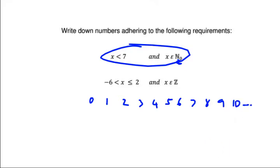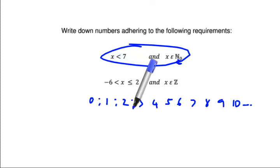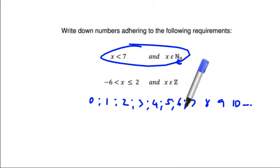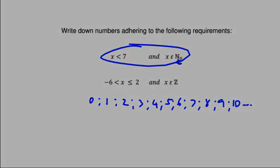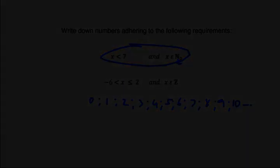But it starts at zero. Now typically what we would do is to separate these numbers with semicolons. Otherwise it just becomes one big number. So we separate them to make sure that's a list of numbers.